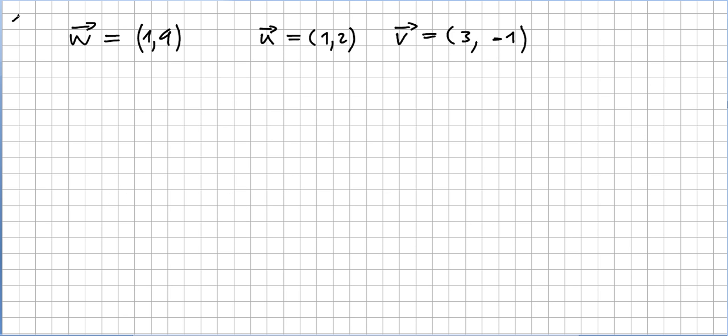Let's do another quick example. Let's say we have vector w and we have vectors u and v. As you can see they are all in R^2. Can we write vector w as a linear combination of vector u and vector v? Is that possible?